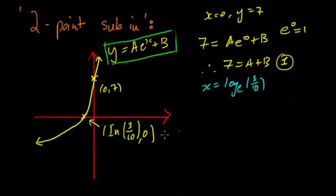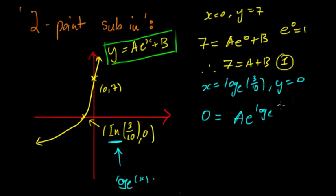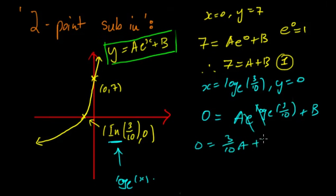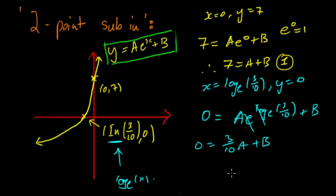Looking at the second point, we know that x = log_e(3/10) — remember that ln refers to log base e — and y = 0. So 0 = ae^(log_e(3/10)) + b. The e's cancel and 3/10 comes down, giving 0 = (3/10)a + b. We can solve this by substituting b = 7 - a from the first equation: 0 = (3/10)a + (7 - a). Solving gives a = 10.